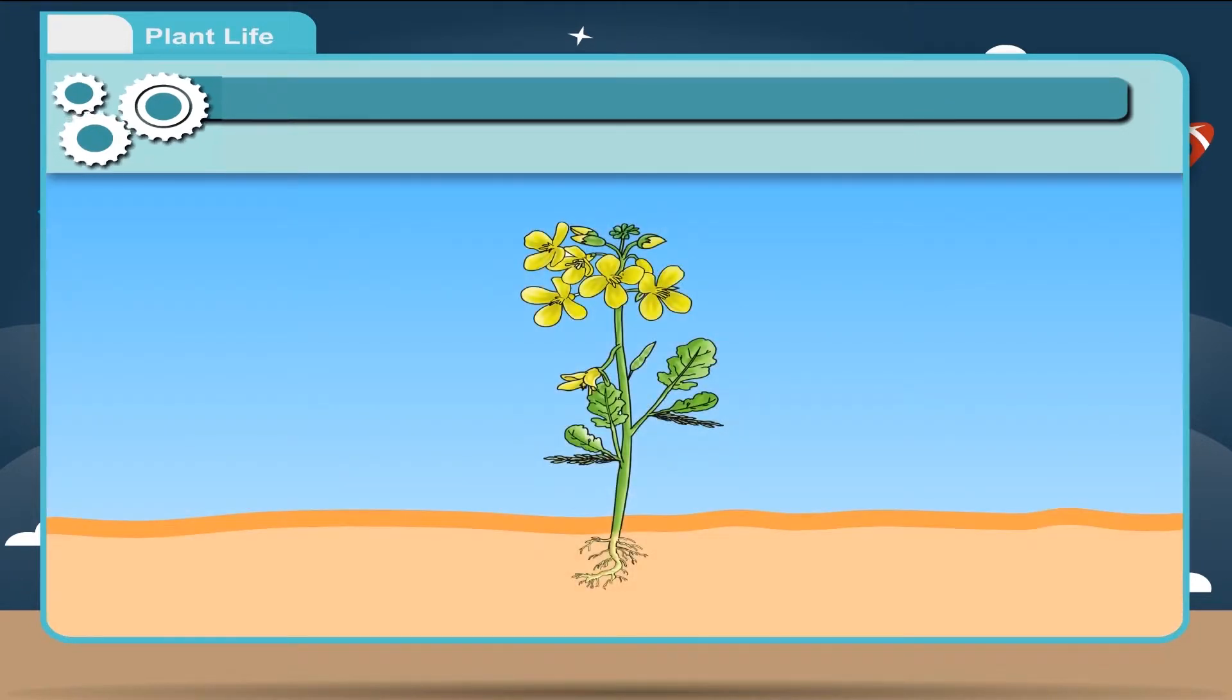The system above the ground which we see is called the shoot system. The shoot system consists of stem, leaves, flowers and fruits.